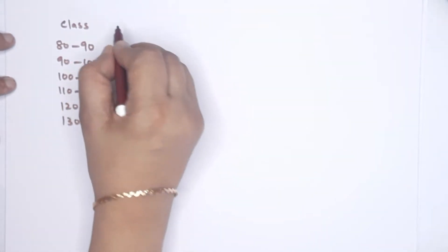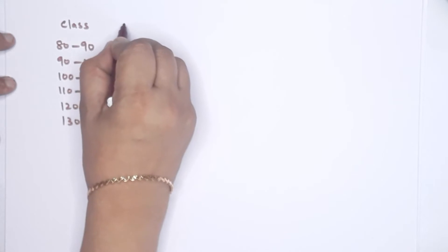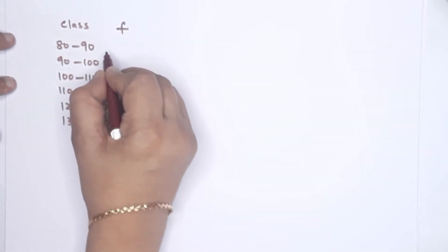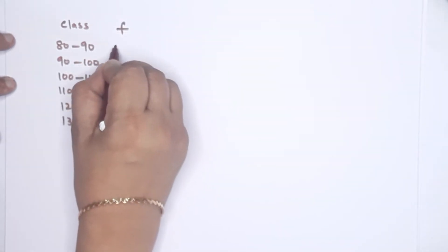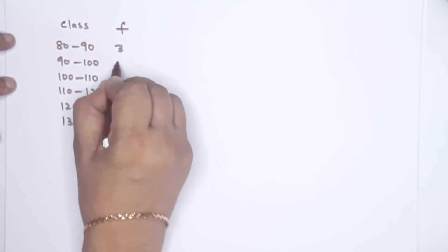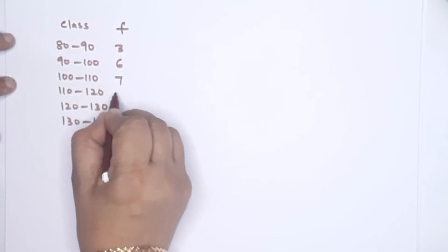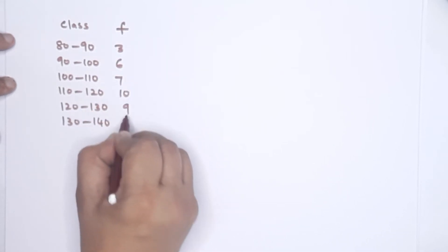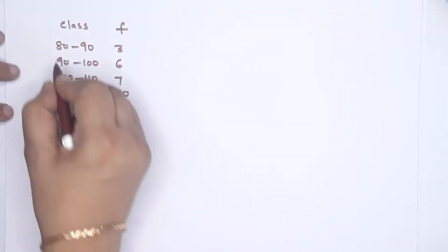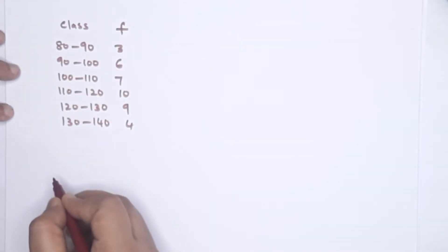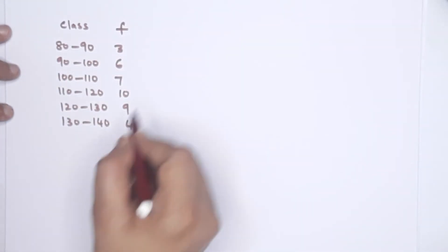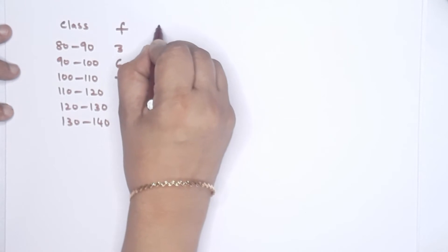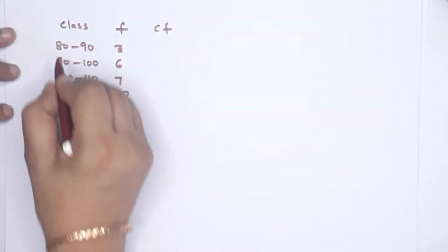The number of households — that is the frequency. The frequencies are 3, 6, 7, 10, 9, and 4. Then class and frequency. This is what we call cumulative frequency, Cf.